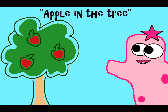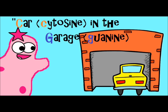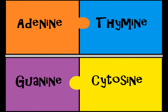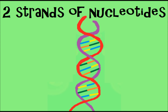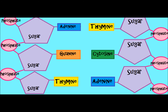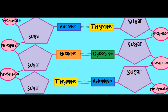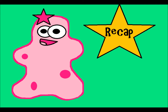A helpful way to remember base pairing: 'apples on the tree' tells you that A (apples) always pairs with T (tree). And 'cars in the garage' reminds you that C always pairs with G. DNA has two strands, with nucleotides running up each side. The bases pair in the middle, held together by hydrogen bonds. The whole structure is twisted into what we call a double helix, with the bases in the center and the sugar-phosphate backbone forming the sides.